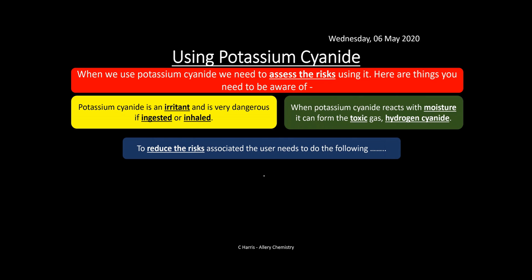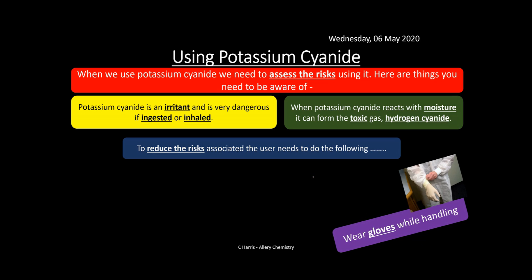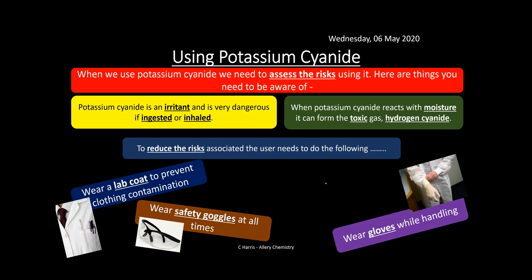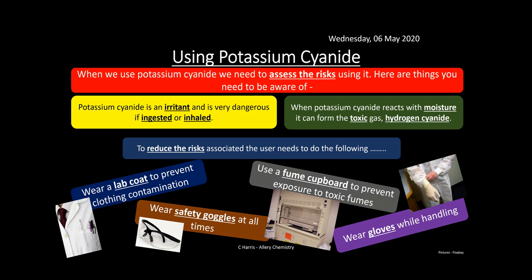To reduce the risks, we take precautions using personal protective equipment (PPE). We must wear gloves when handling chemicals like this and wear safety goggles at all times — as with any reaction. A lab coat prevents contamination of clothing. Ideally, use a fume cupboard to prevent exposure to toxic fumes, particularly relevant if there's moisture present and hydrogen cyanide could be generated — breathing in hydrogen cyanide is toxic and extremely hazardous.